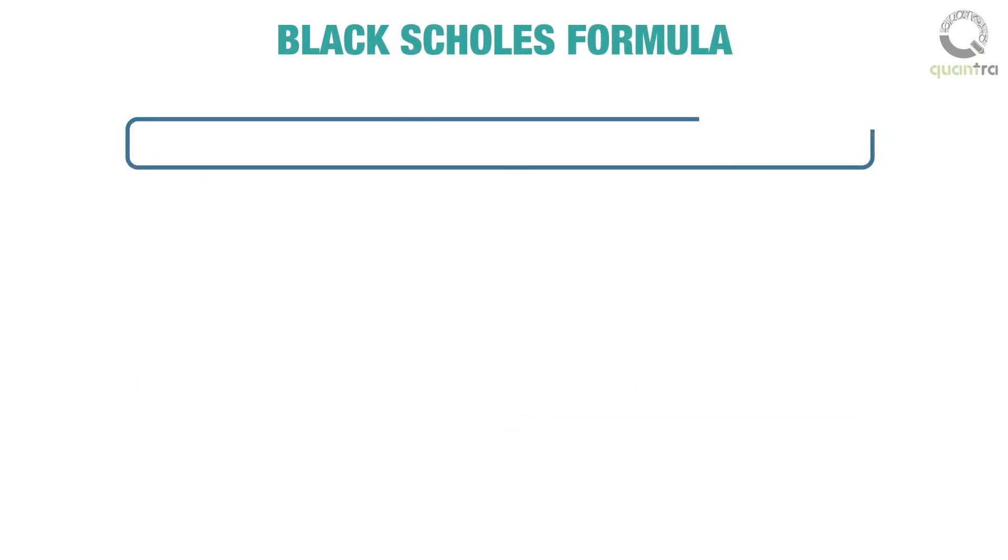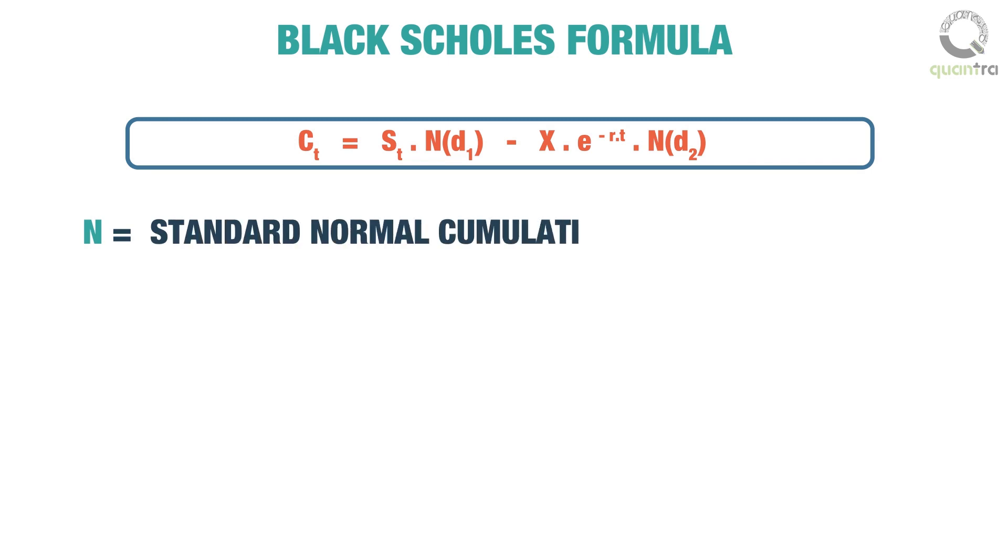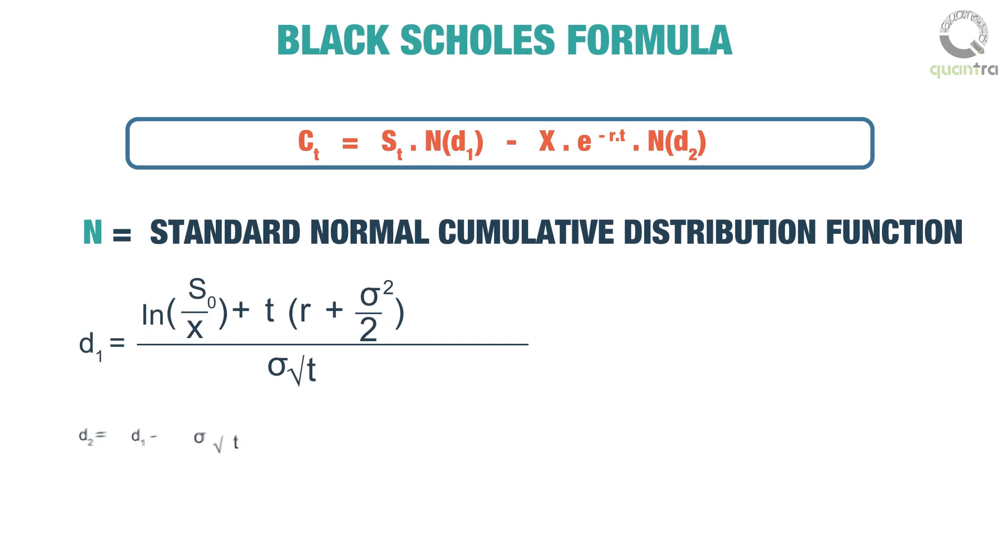The equation for which is Ct equals St into N(d1) minus X multiplied by e raised to the power of minus rt, multiplied by N(d2), where N denotes the standard normal cumulative distribution function, and d1 and d2 are variables that are defined as shown.